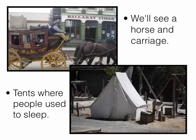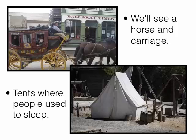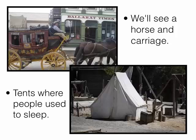They'll also be able to see the horse and carriage and the tents where people used to sleep, which should give them some curiosity about what they're going to see at Sovereign Hill. One of the important things about a social story is not only to prepare but also to encourage and motivate, so that they do want to go — because a lot of times children don't want to go to things because they just don't know what to expect.